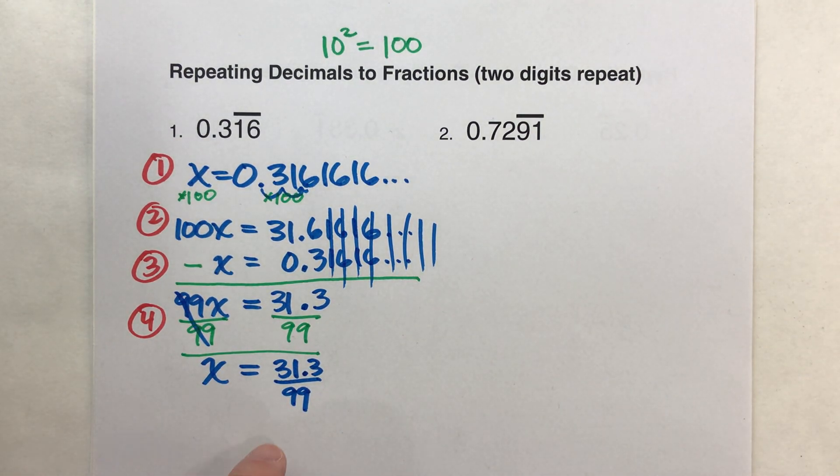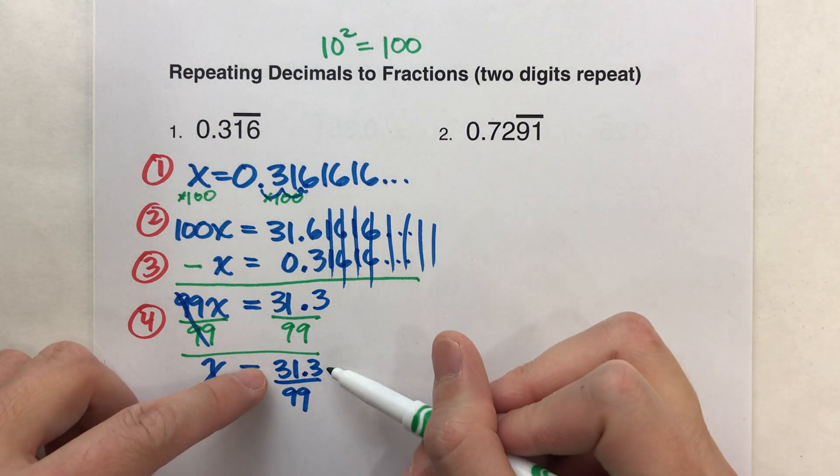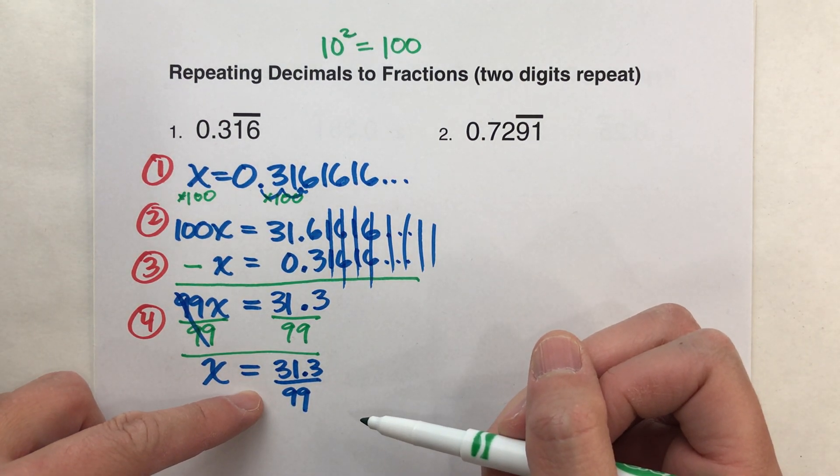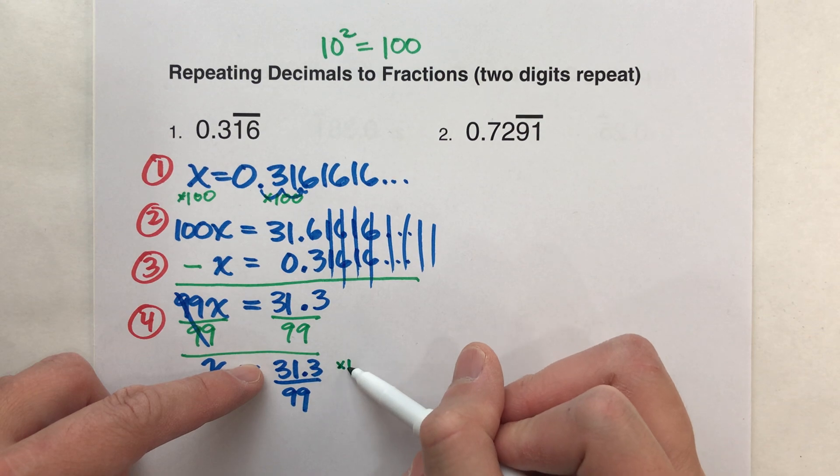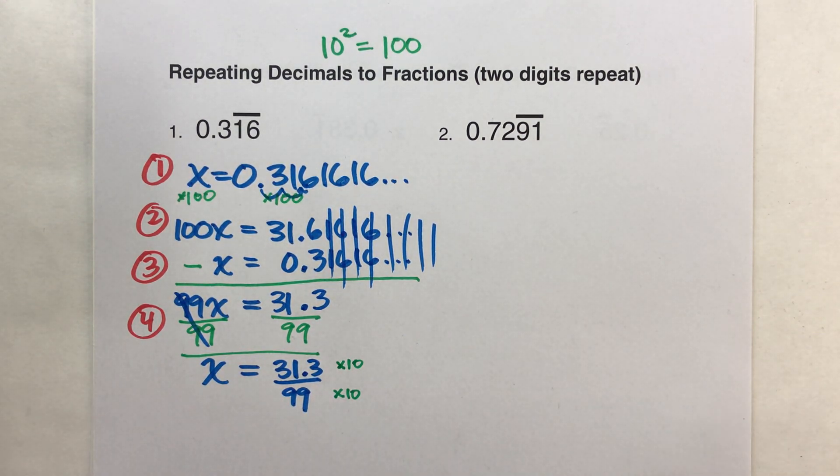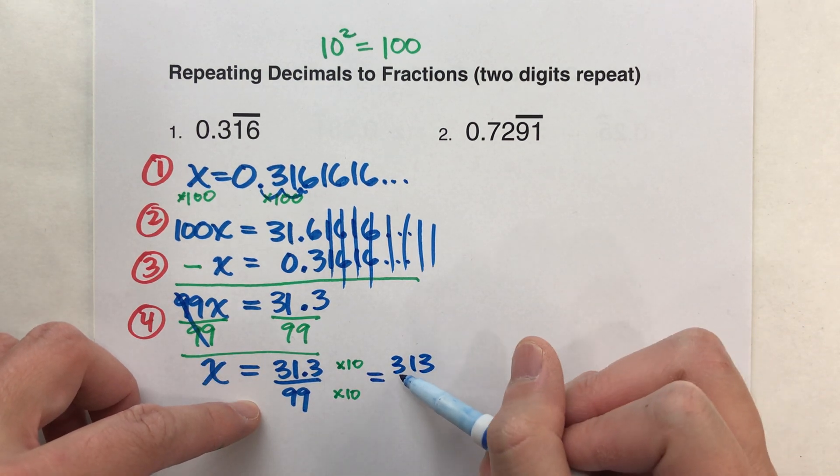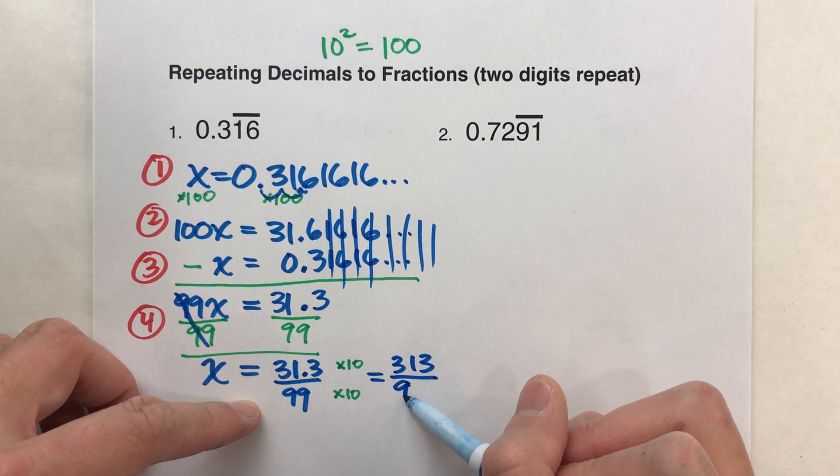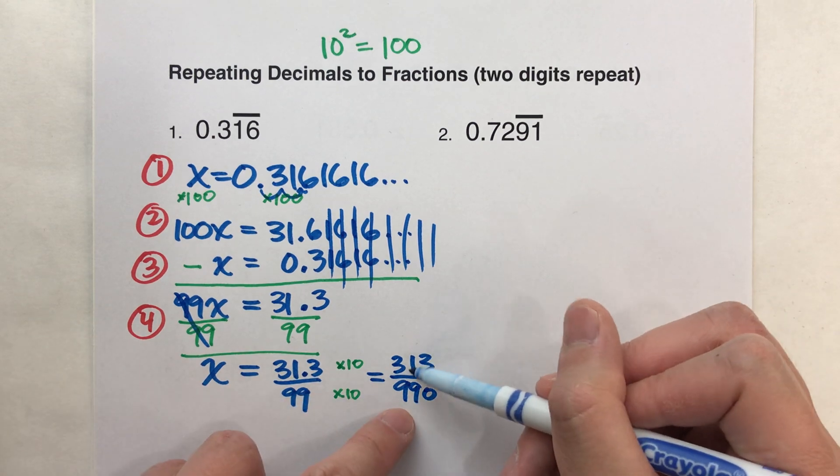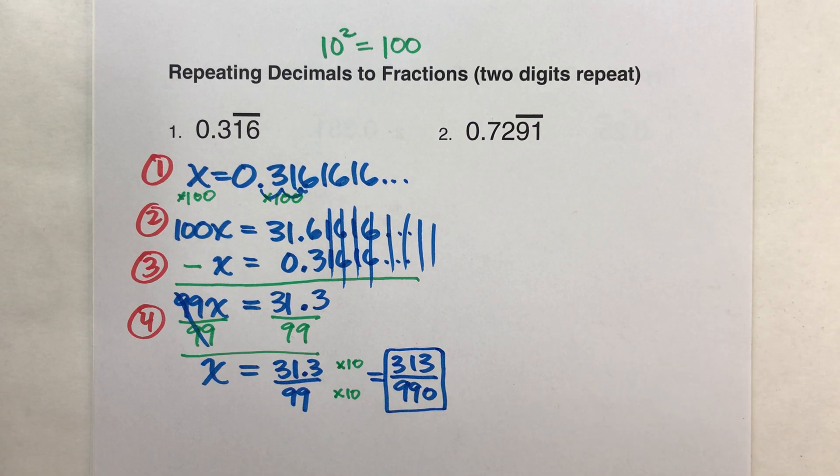We're almost done, but notice we have a fraction with a decimal in it. We're not allowed to have decimals in a fraction. So we need to multiply the top and bottom of this fraction to make it all whole numbers. And the easiest way to do that is just to multiply it by 10. Because multiplying numbers by 10 moves the decimal over one spot. So when I do that, 31.3 times 10 moves the decimal over to get 313. And 99 times 10 is 990. Can I simplify this? Nope, I cannot. That is going to be my fraction.